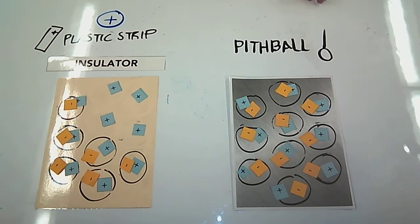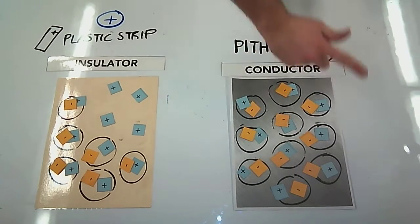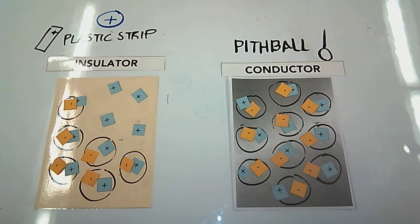Now my pith ball is a conductor, it's metal. It allows electrons to move freely throughout it. Right now it is neutral. There's an equal amount of protons to electrons.